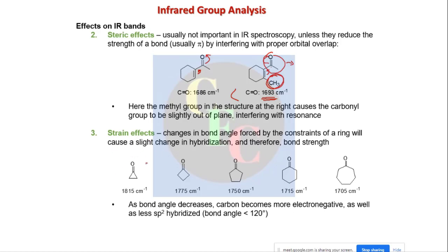Strain effects also influence IR frequencies. For different cyclic ketones, the position changes. More strain — as in three-membered or four-membered rings — means the carbonyl stretching occurs at very high frequencies compared to less strained rings. The six-membered ring is the least strained, so it shows the normal carbonyl frequency. More strain leads to higher frequency for the C=O bond.